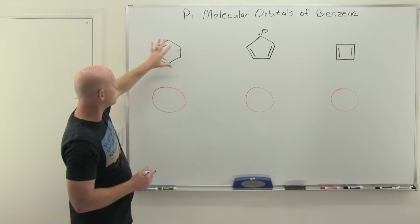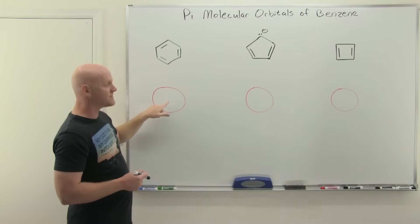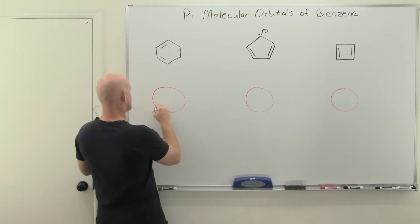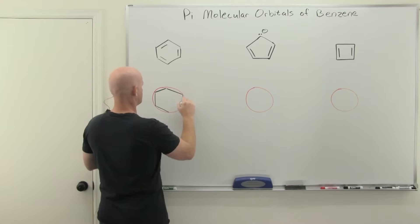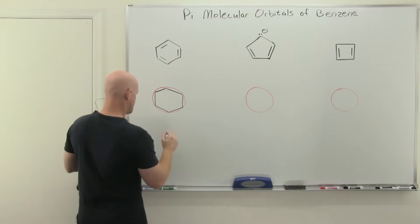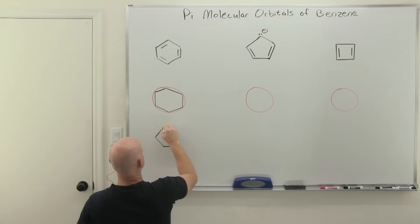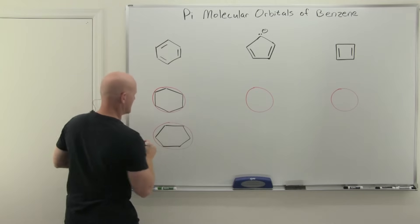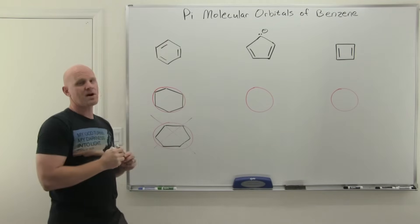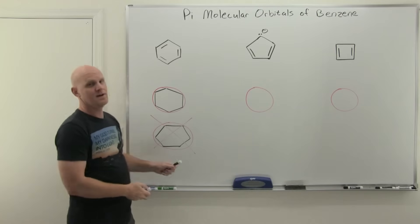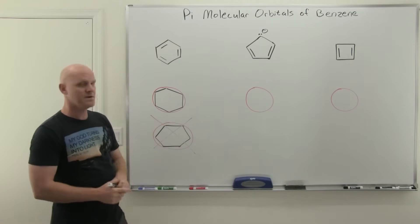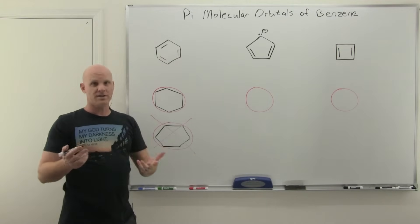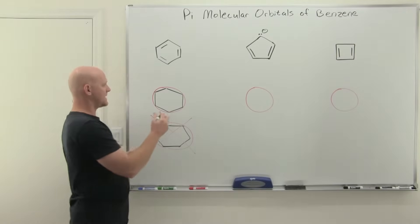If you inscribe the shape — in this case a hexagon — inside a circle, that's the frost circle. You want to do it in a special way: a vertex must point straight down. If you inscribe it with a flat side pointing down, that is not going to work. You always have to have a vertex pointing straight down, not a flat side on the bottom. Where every vertex is corresponds to the energy level of one of the molecular orbitals.